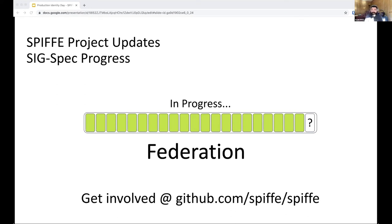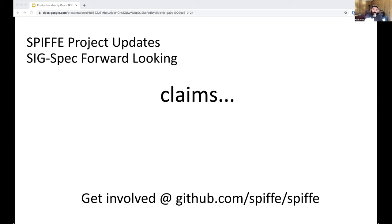Looking forward, once federation is complete and out the door, we have a couple of things on the radar for SIG Spec. We've received a lot of questions from the community about claims. SPIFFY currently allows claims to be set on its SPIFFEIDs — it doesn't forbid them, but it also doesn't say you have to use them and it doesn't define them. What we're exploring now are use cases to try and figure out if that's good enough or not — does SPIFFY need to codify claim definition at the spec level? And if so, what does that mean for interoperability between trust domains and between different SPIFFY implementations?